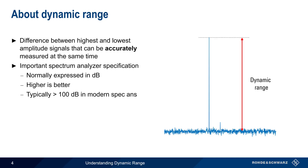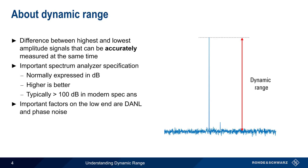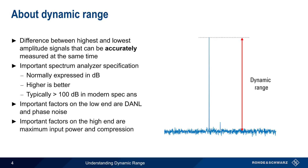Several factors influence the upper and lower limits of an analyzer's dynamic range. The low end is often largely determined by the analyzer's displayed average noise level, or DANL, and in some cases by phase noise. Maximum safe input power and compression often determine the upper limit. The presence of spurious products generated within the analyzer itself also plays an important role. In the remainder of this presentation, we'll discuss each of these factors and how they contribute to an analyzer's dynamic range.